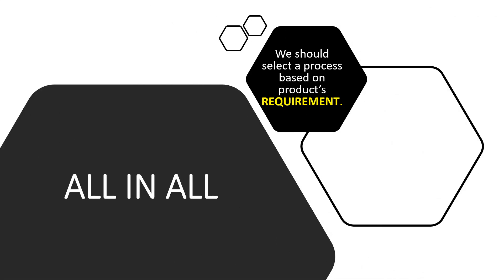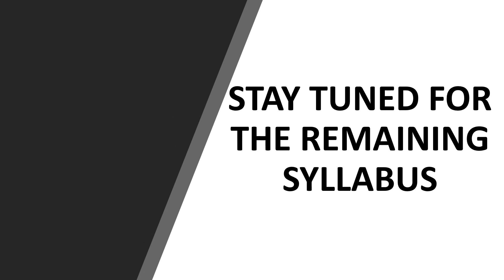In summary, we should select a process based on the product's requirements, because some products need a smooth surface, some need strength, some need dimensional accuracy, and some should be produced at low cost. We need to look at the requirements first. Stay tuned for the remaining syllabus. Thank you.